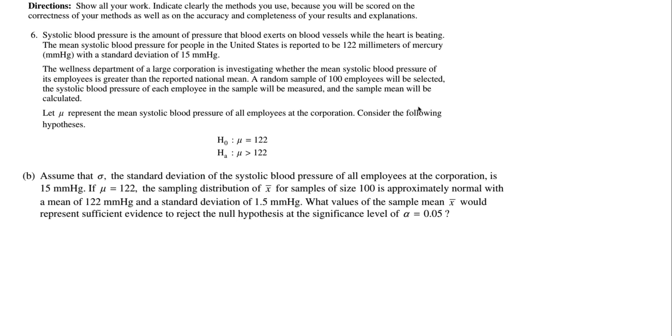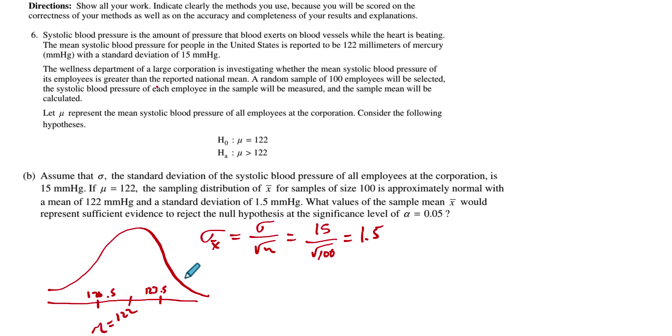For part B, they give you some assumptions. Assume the standard deviation is 15 for this population of employees, and they're talking about a sampling distribution for size 100. They want to know what values of the sample mean x-bar would represent enough evidence to reject the null. So I'm going to draw a picture of this.